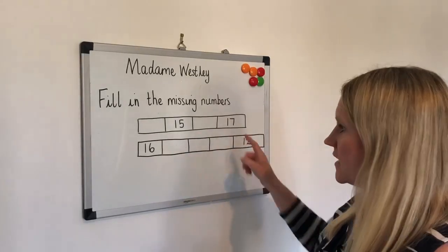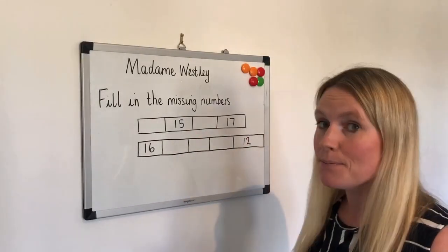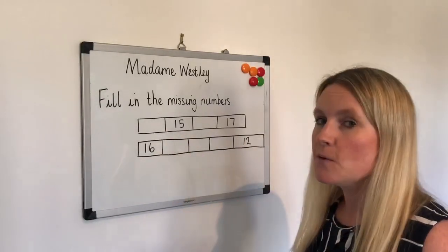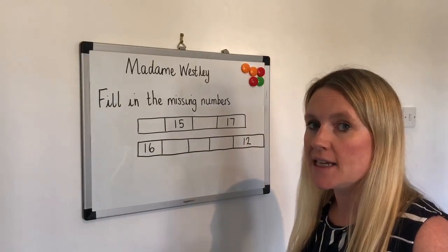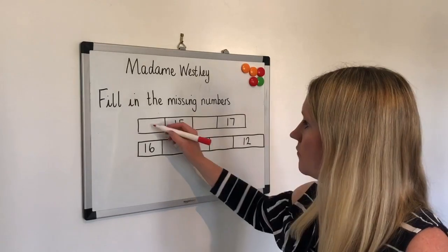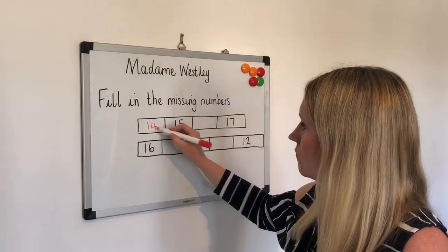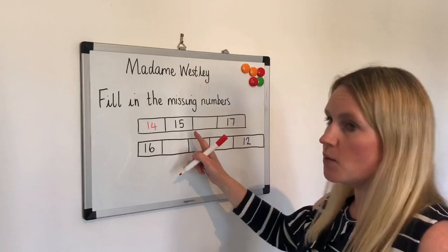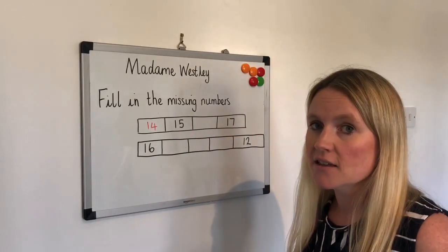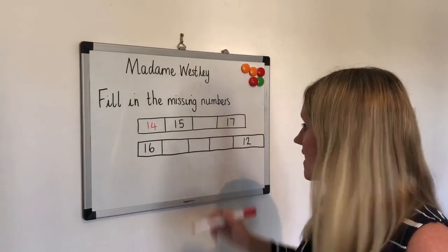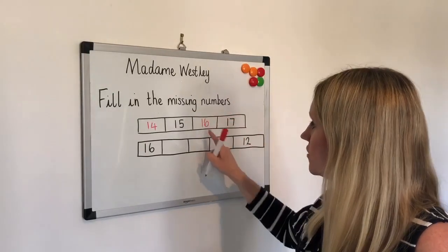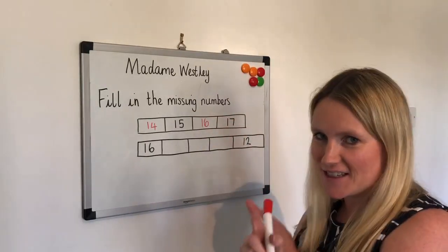On the first line, as you can see, the number is getting bigger. So what number comes before 15? That's right, it's 14. And what number is between 15 and 17? That's right, it's 16. Make sure you've put 1 and 6, and not 6 and 1.